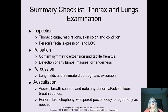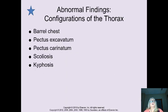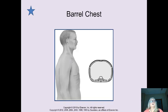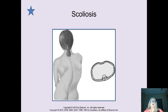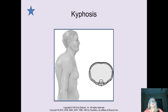Summary checklist: you have your inspection, palpation, percussion, and auscultation. Know what all of these terms mean — what a barrel chest is, what pectus excavatum and pectus carinatum are, and what scoliosis and kyphosis are. Scoliosis is a curvature of the spine. There are great pictures in your book. You can see why kyphosis would make breathing difficult.